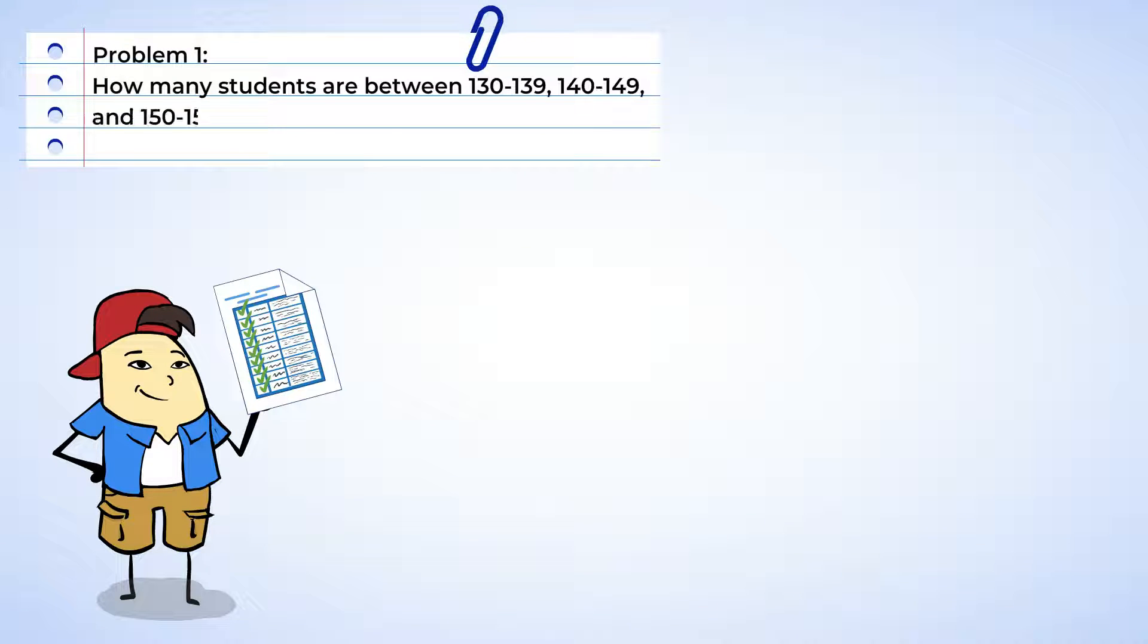Chen created this survey and collected data to answer some very specific questions. How many students are between 130 and 139 centimeters, 140 and 149 centimeters, and 150 and 159 centimeters? The average height for an 11-year-old is 144 centimeters. How many students are equal to or shorter than 144 centimeters?